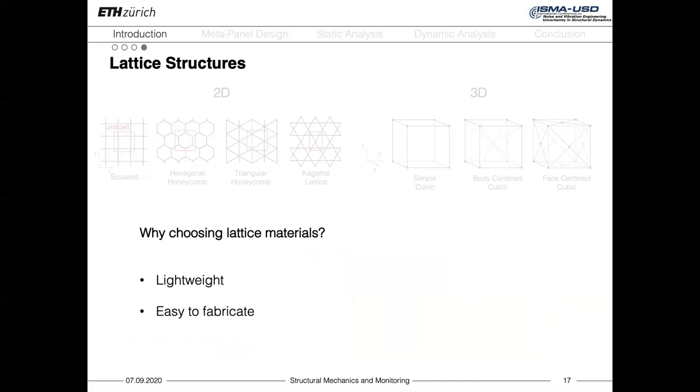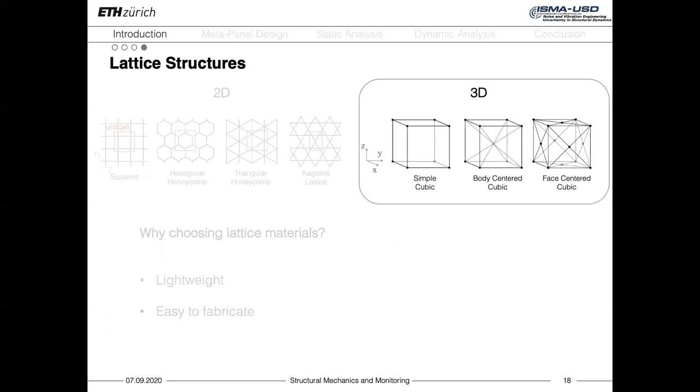The reason why we choose lattice materials as a starting point for the design of our metadevice is that they are lightweight structures that therefore would not add large masses to the existing structural components. Moreover, they are easy to fabricate with 3D printing techniques.